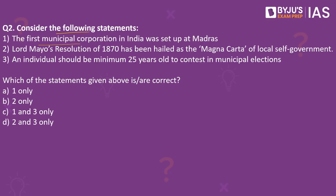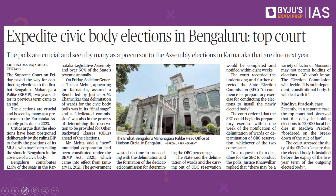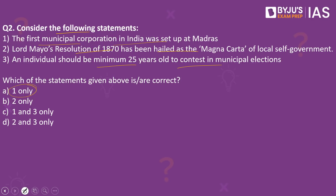Now let's look into the next practice question. Consider the following statements: the first municipal corporation in India was set up at Madras; Lord Mayo's resolution of 1870 has been hailed as the Magna Carta of local self-government; and individuals should be minimum 25 years old to contest in municipal elections. The answer is one only. The first statement is correct — the first municipal corporation in India was indeed set up at Madras. The second statement is wrong: it is Lord Ripon's resolution of 1882 that is hailed as the Magna Carta of local self-government, not Lord Mayo's resolution of 1870.